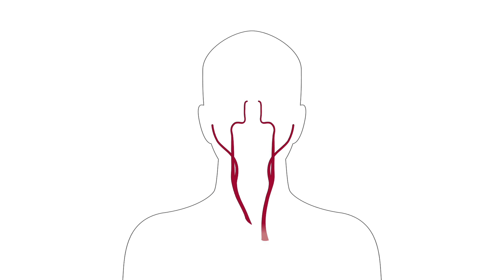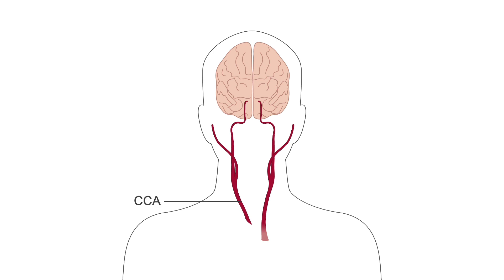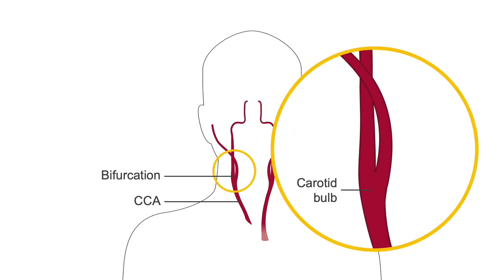The main arch arteries of the neck are the carotids, which serve as the anterior supply of the brain. The common carotid artery, or CCA, has no branches and widens at the bifurcation, which is known as the carotid bulb. The bulb usually includes the origin of the internal carotid artery, or ICA, which lies posterior and lateral to the external carotid artery.